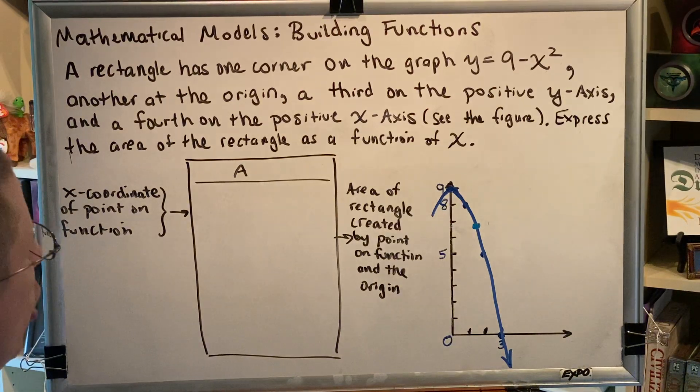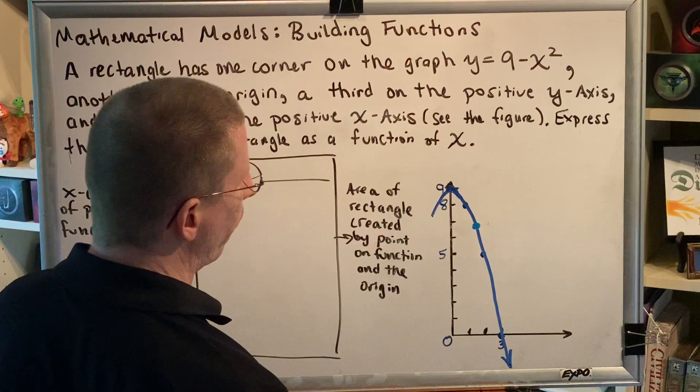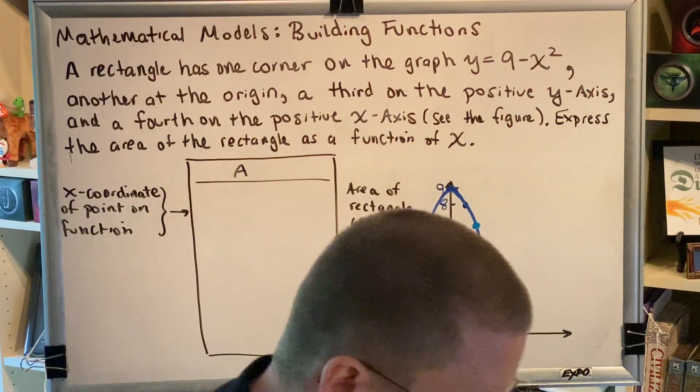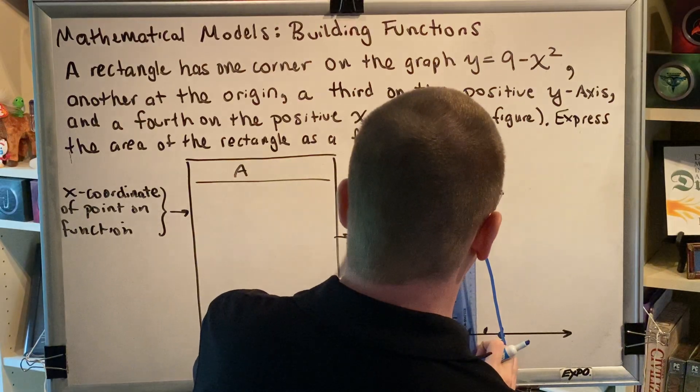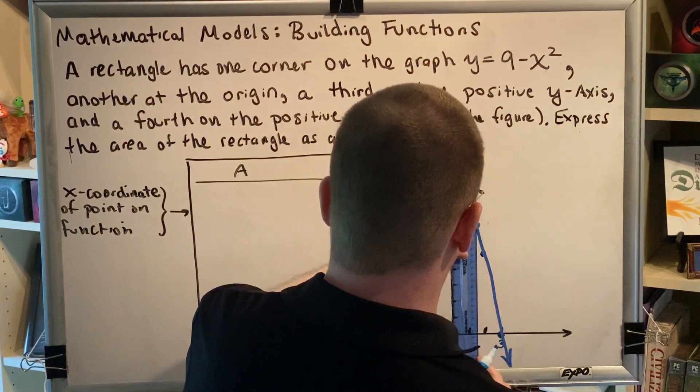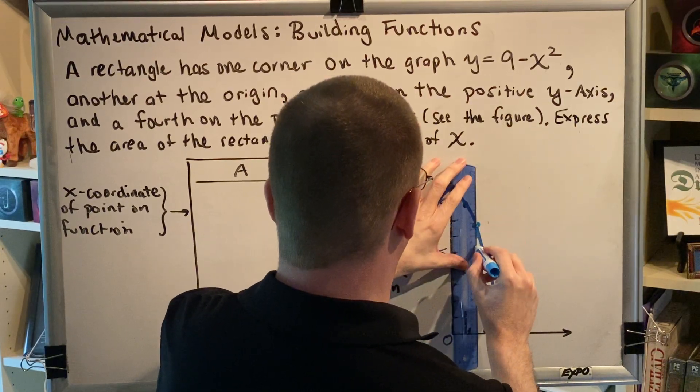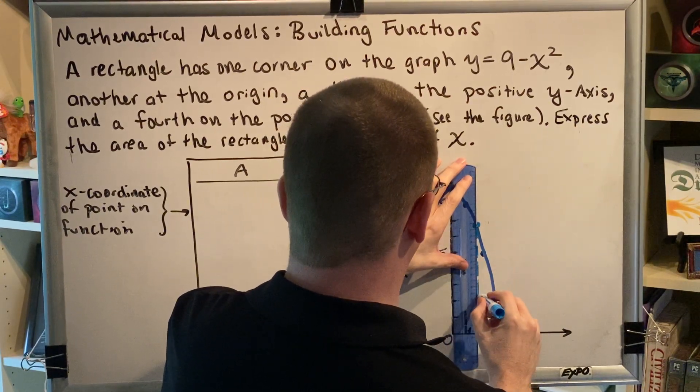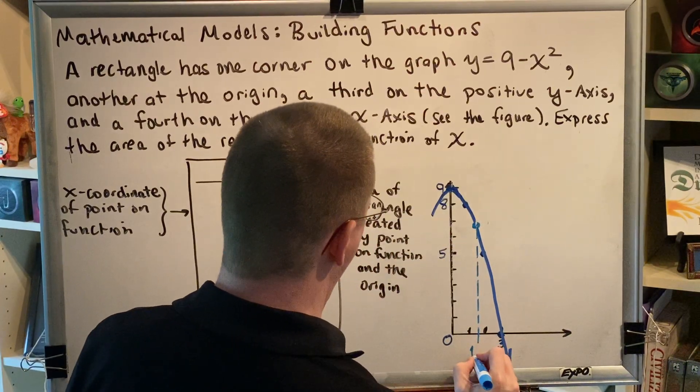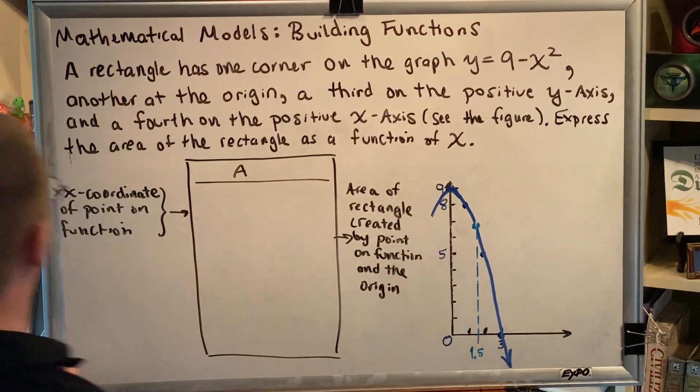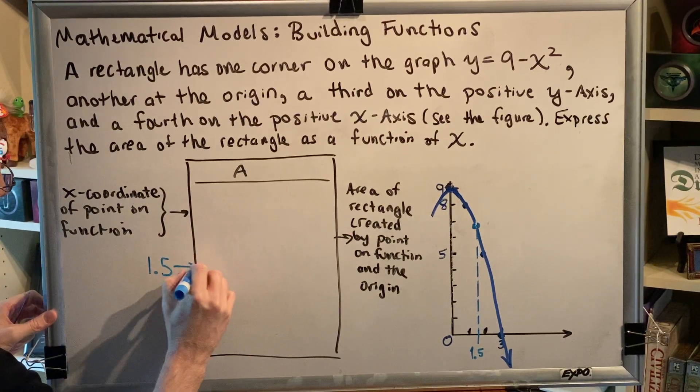I've already drawn in light blue the point on the graph whose x-coordinate is 1.5. Let me draw this line here. We can see that this has an x-coordinate of 1.5, so 1.5 is going to go into our function.